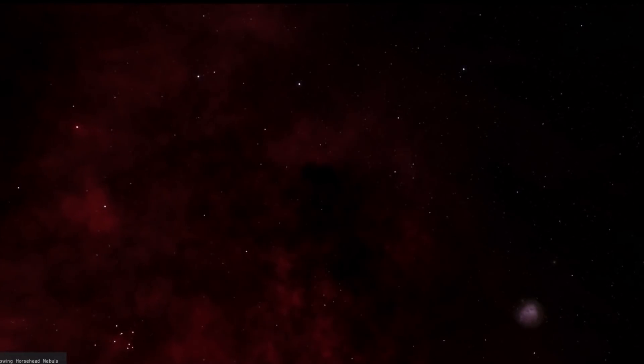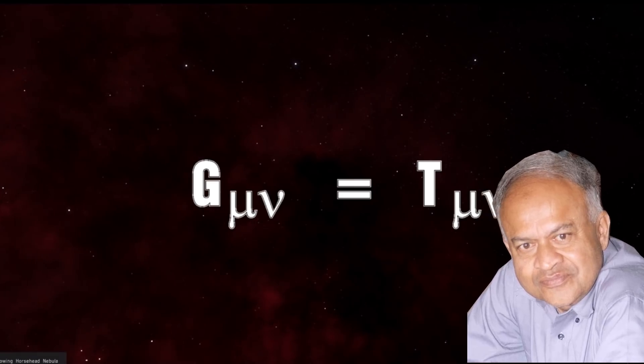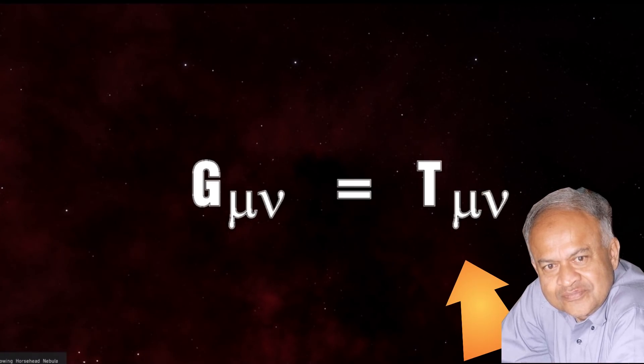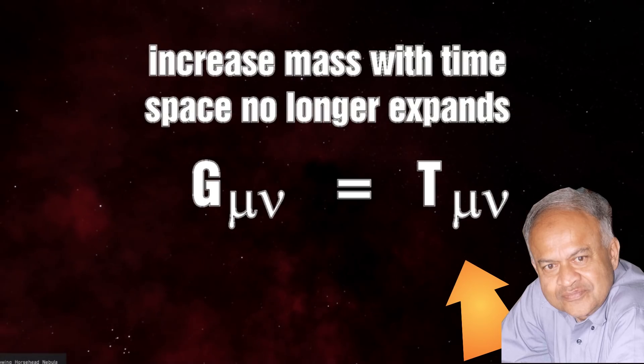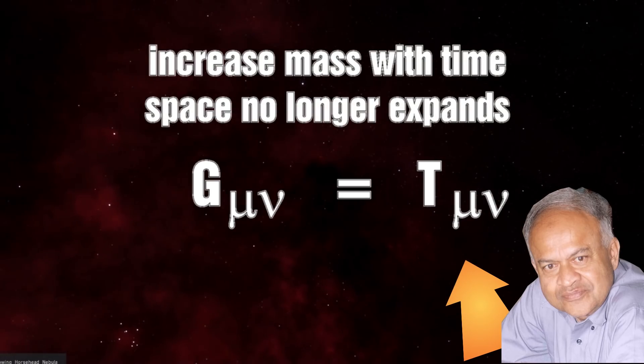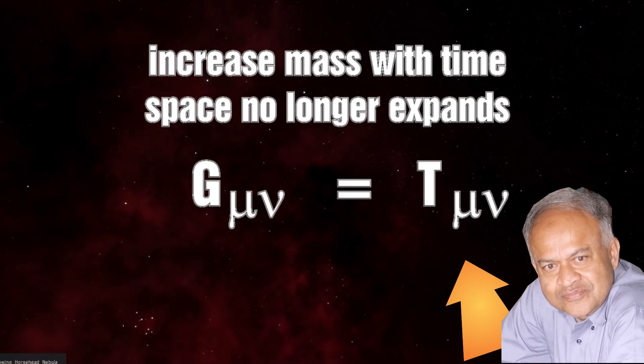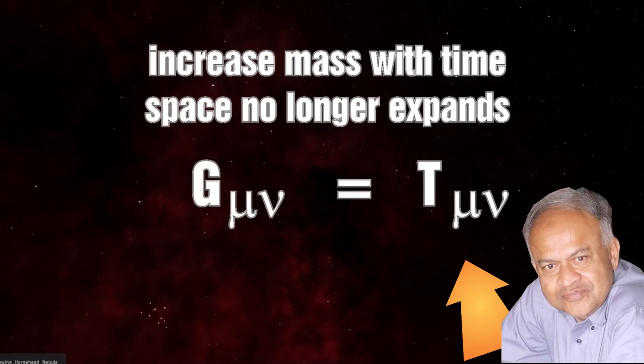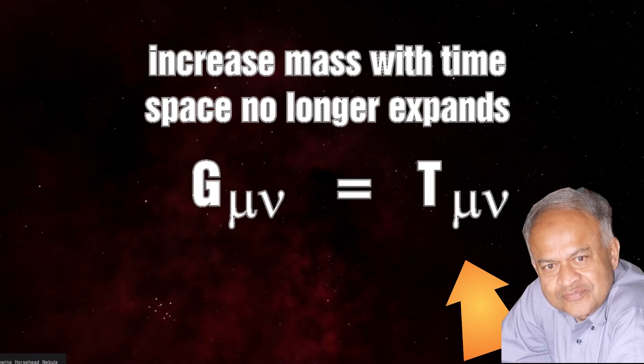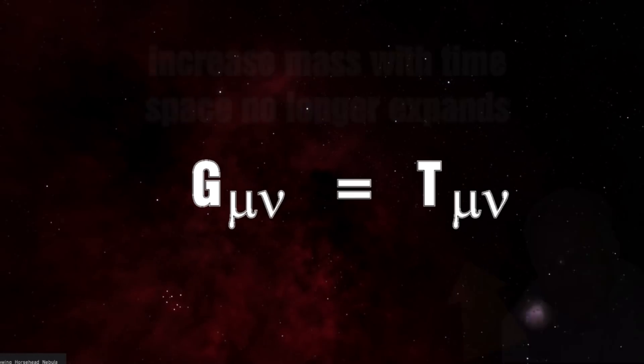In 1977, Nalikar generalized the equations of general relativity. In his case, he assumed the mass would change over time. In fact, he assumed mass would change in an equation where mass equals a t squared, where t is the time and a is a constant.